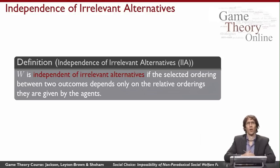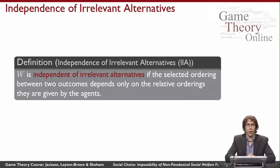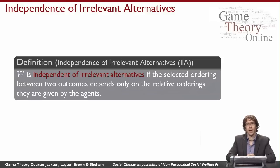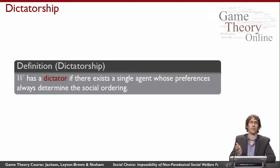A second thing we might want is what we call independence of irrelevant alternatives. A social welfare function is independent of irrelevant alternatives if the way that I rank between A and B only depends on the way all of the individual agents ranked A and B. I shouldn't care about how everyone felt about A and C or B and D — I should just look at the A-B rankings for everyone, and that tells me how the social welfare function ranks A and B.